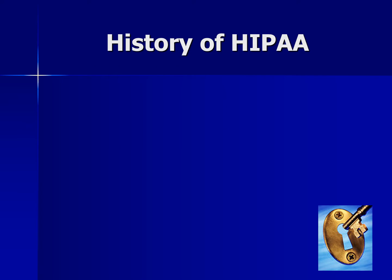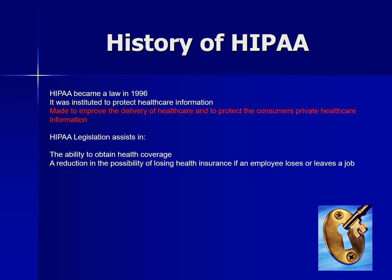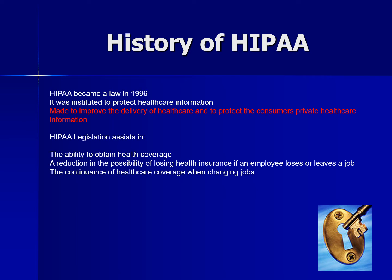Here's a little history of HIPAA. HIPAA became a law in 1996. It was instituted to protect healthcare information and to improve the delivery of healthcare and to protect the consumer's private healthcare information. HIPAA legislation assists in the ability to obtain health coverage, the reduction in the possibility of losing health insurance if an employee loses or leaves a job, and the continuance of healthcare coverage when changing jobs.